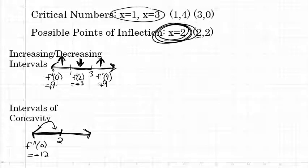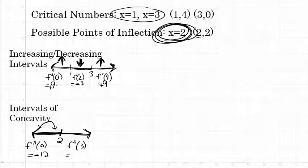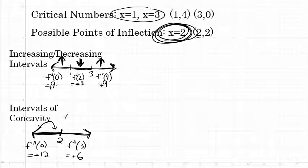After x = 2, I'll choose a value between 2 and infinity and put it into the second derivative. f''(3) — substituting 3 into the second derivative — gives positive 6. That tells me the shape of the curve will be concave up from 2 to infinity.